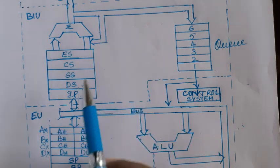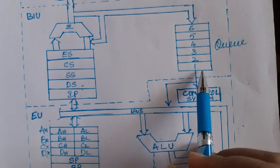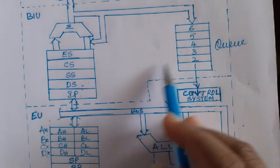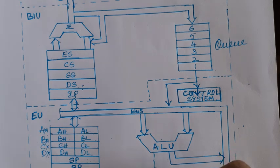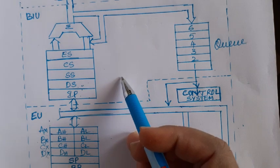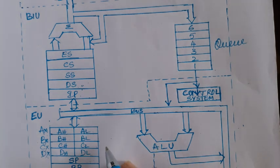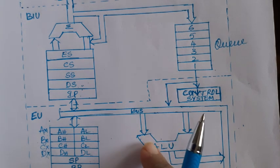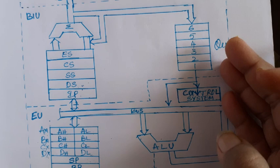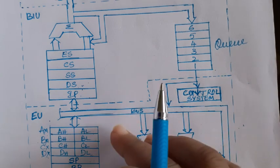When an instruction is under execution, the Bus Interface Unit is free, so it fetches the next instruction bytes and keeps them in the instruction queue. By this approach, the speed of the processor can be increased — one instruction is under execution in the Execution Unit while the next instruction is pre-fetched by the BIU and kept in the queue. After completion of the current instruction, the Execution Unit will have the next instruction readily available.